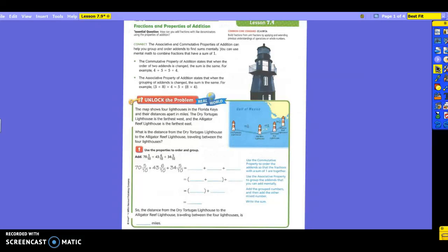So take a look at what they're using here. As you can see, from the Dry Tortugas Lighthouse to the Key West Lighthouse is how long? 70 and 5 tenths. From the Key West Lighthouse to the next one, what is it? 43 and 6 tenths. From there to the Alligator Reef Lighthouse is 34 and 5 tenths. So you can see down here that we're going to use those properties to order and group them. They just wrote them in the order from the left to the right of the lighthouses. So 70 and 5 tenths was listed first, 43 and 6 tenths, and then 34 and 5 tenths. Now, is that going to be the easiest way to do the addition for these?